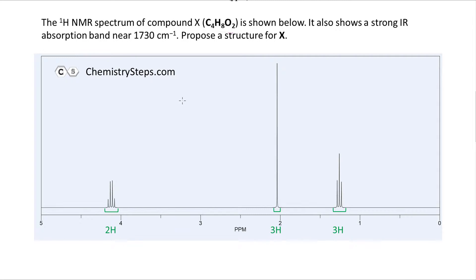Let's start solving these NMR problems. For the first molecule, the molecular formula given is C4H8O2. We have the NMR spectrum, and there is also IR data. In a lot of cases the IR data will not be necessary, but you can use it as additional supplemental information to make problem solving easier.